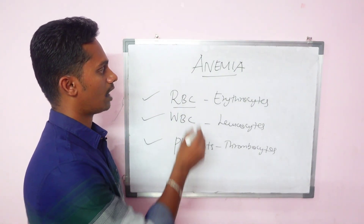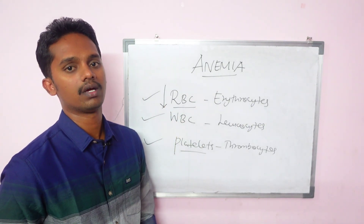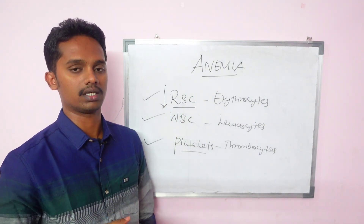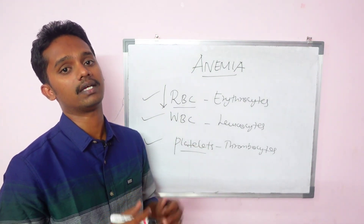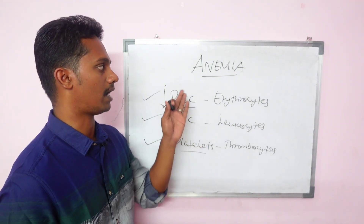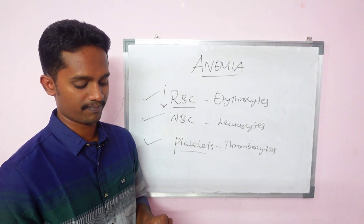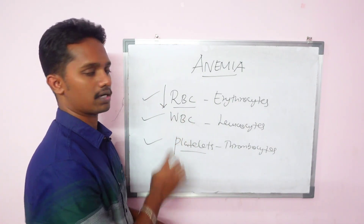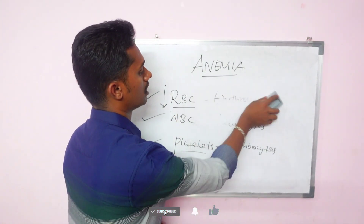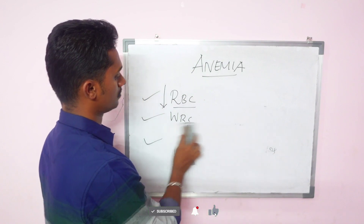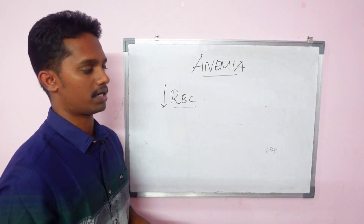So what happens at a low level of RBC? When the level of RBC is low, that is the main part of anemia. If the level of RBC is low, obviously the hemoglobin is also low.